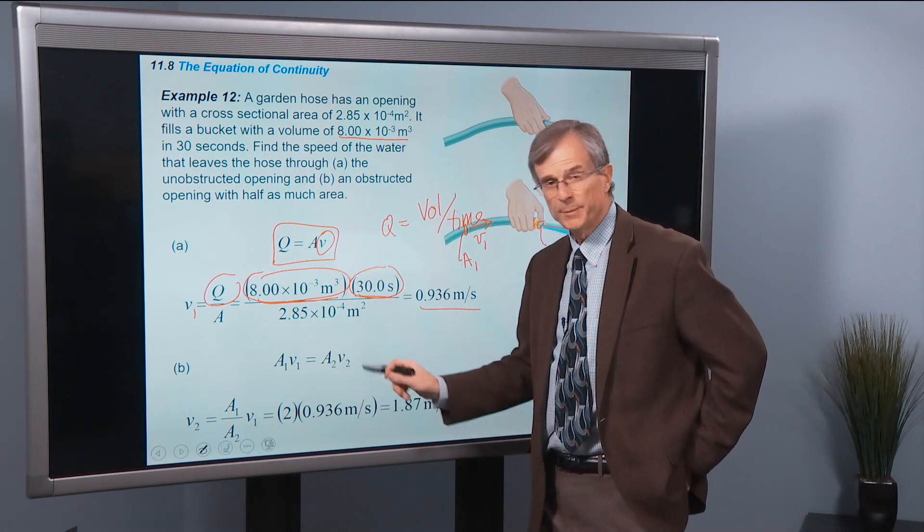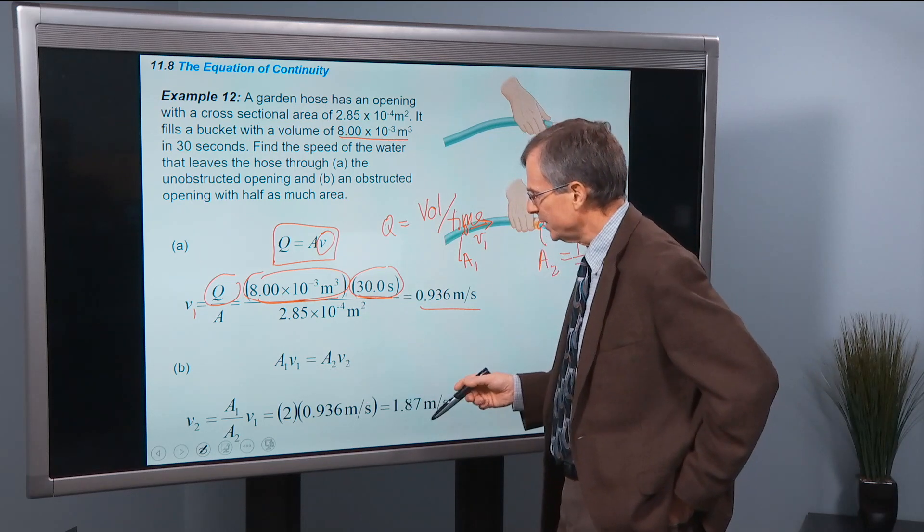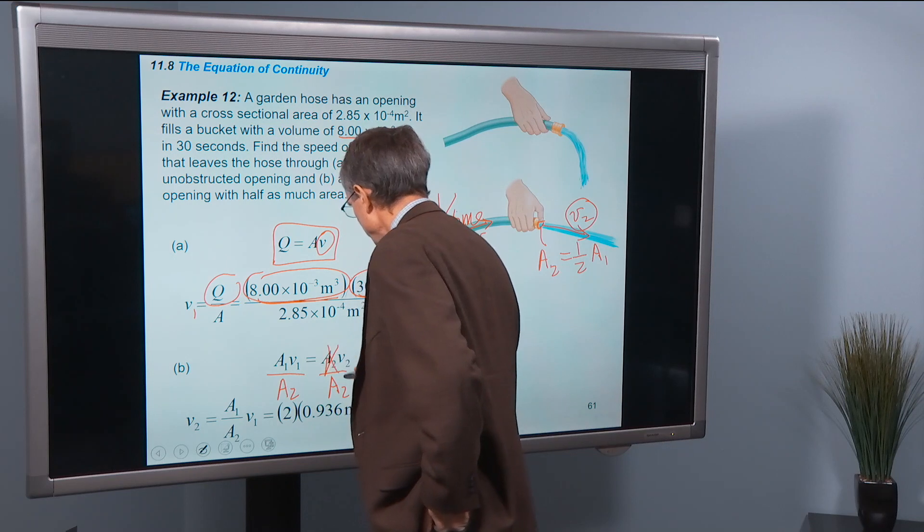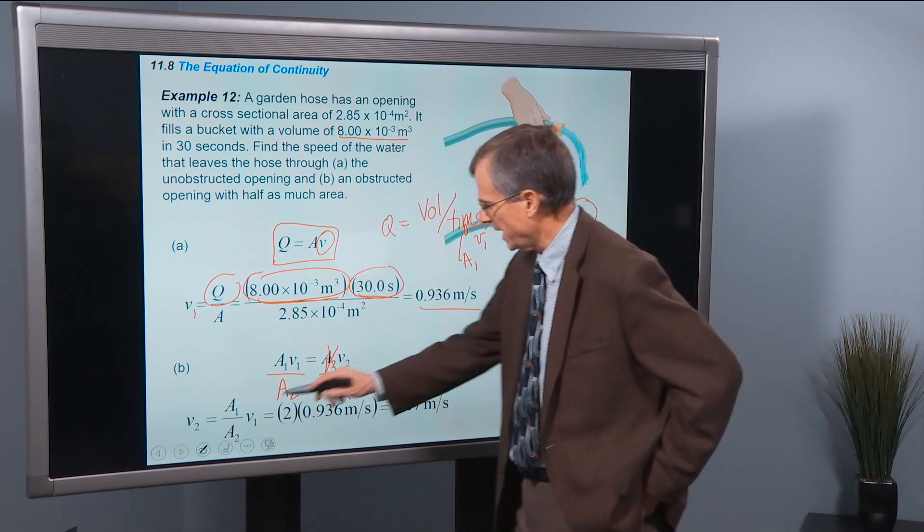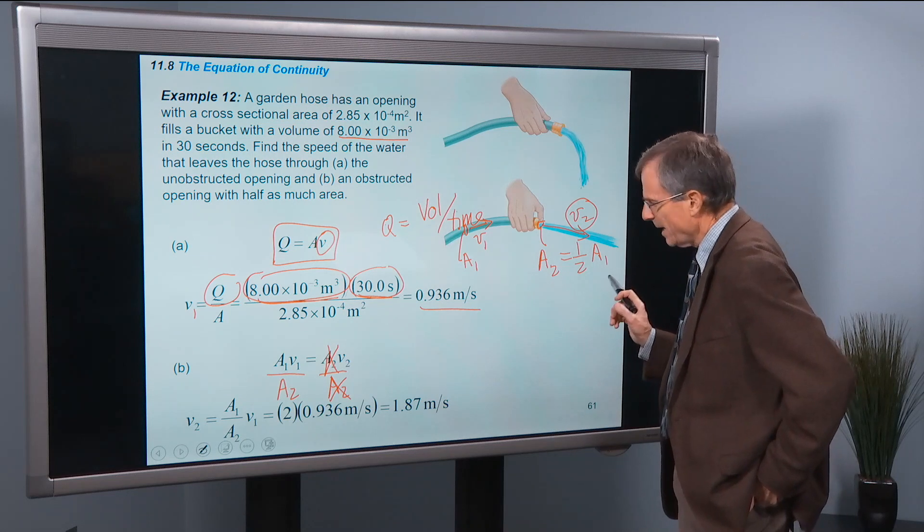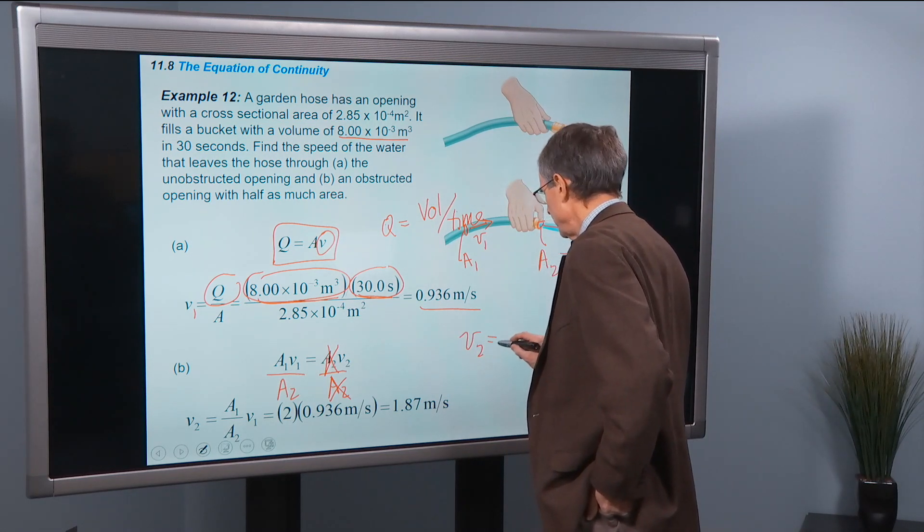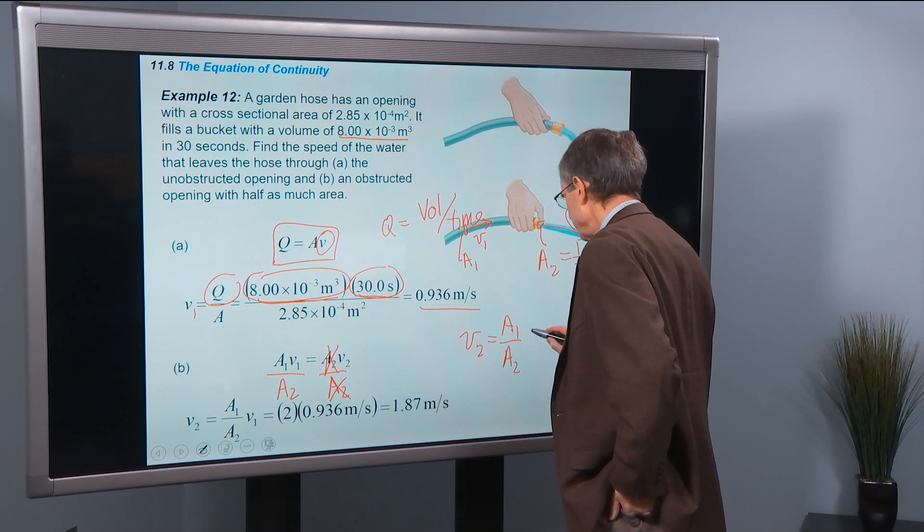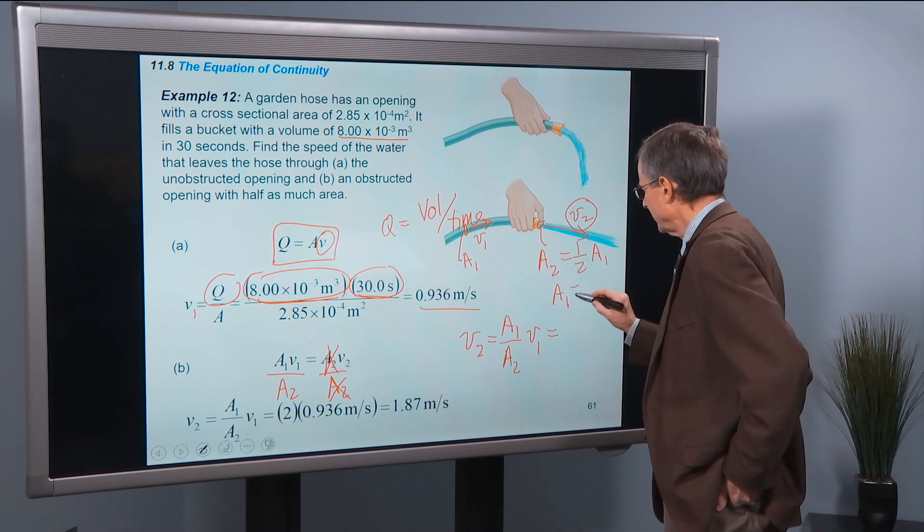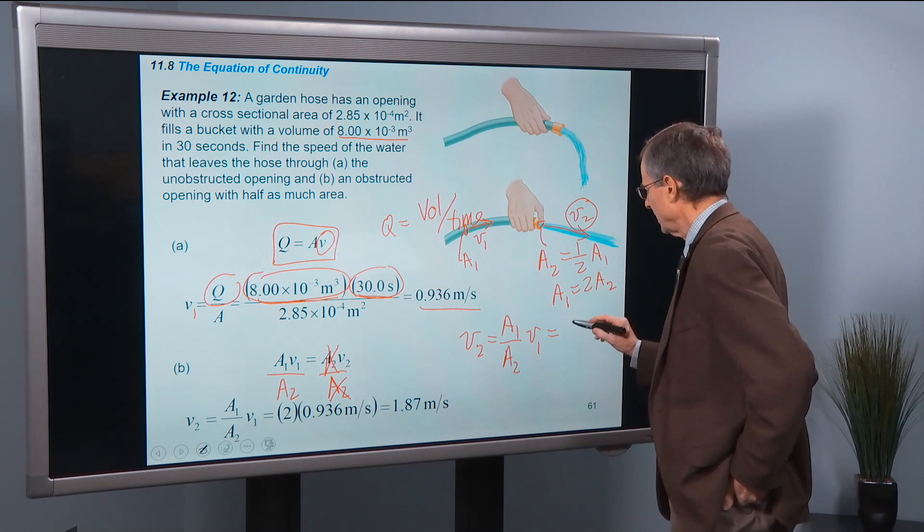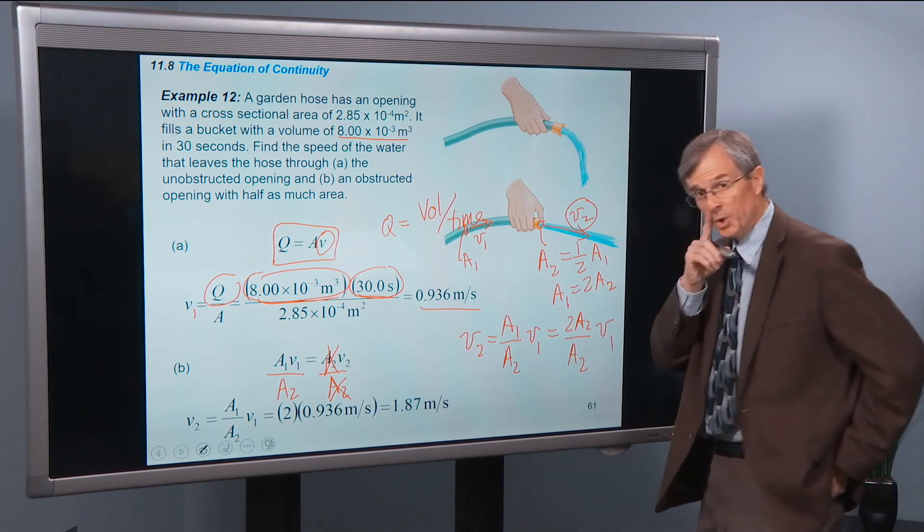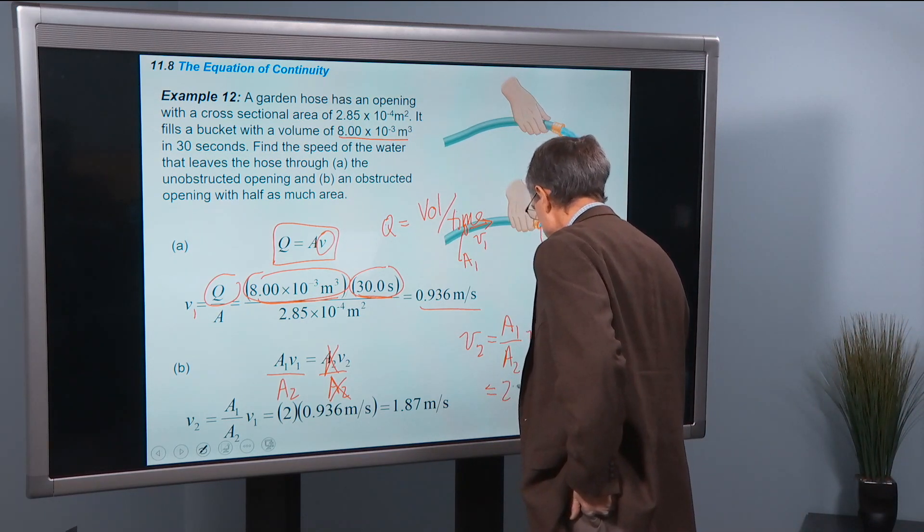The volume flow rate has to be conserved, that conserves mass, and we can solve for v2 by dividing both sides by a2. The a2's cancel on the right side, and v2 is a1 over a2 times v1. And a2 is one half a1. So v2 is a1 over a2 times v1.